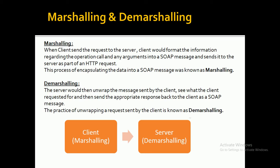Whenever we are sending a request to the server, what the client will do is format that information — the operation we are trying to call from the server, the list of arguments, the return type of that operation — all the information the client will format into a SOAP message and then send it to the server as part of an HTTP request. The process of encapsulating the data into a SOAP message we call the Marshalling process, so this concept is called Marshalling.